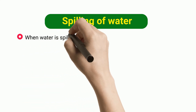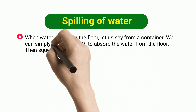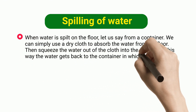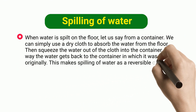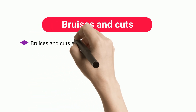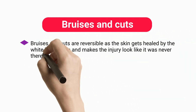Spilling of Water: when water is spilt on the floor from a container, we can simply use a dry cloth to absorb the water from the floor, then squeeze the water out of the cloth into the container. This way the water gets back to the container in which it was lying originally, making spilling of water a reversible change. Bruises and Cuts: bruises and cuts are reversible as the skin gets healed by the white blood cells and makes the injury look like it was never there.